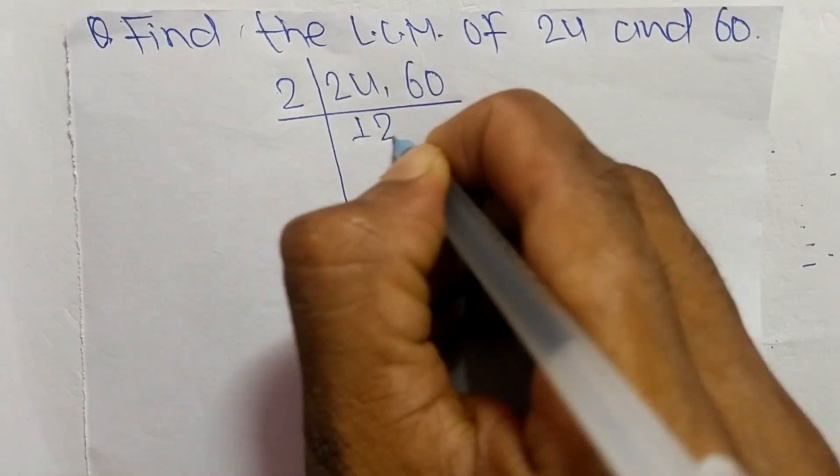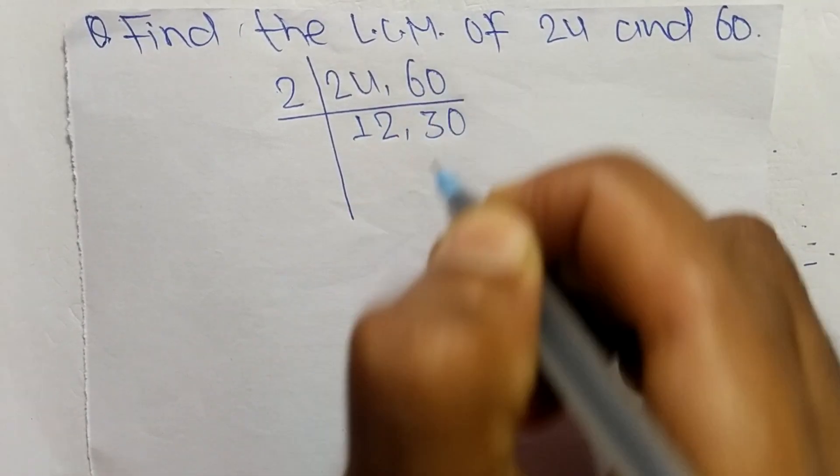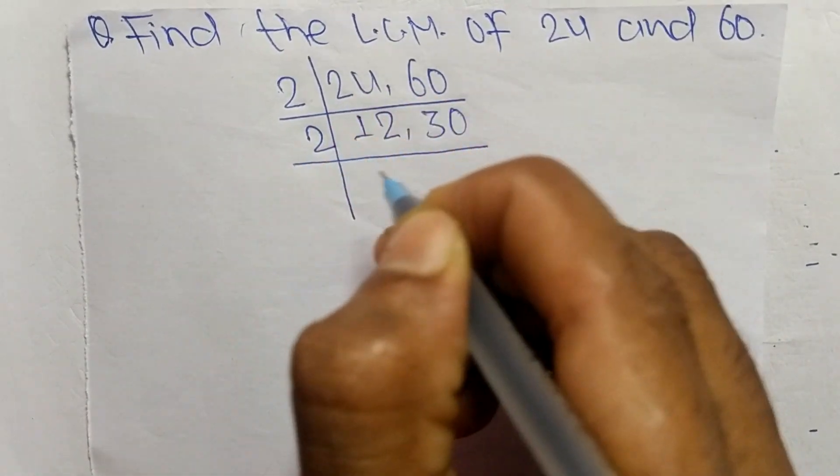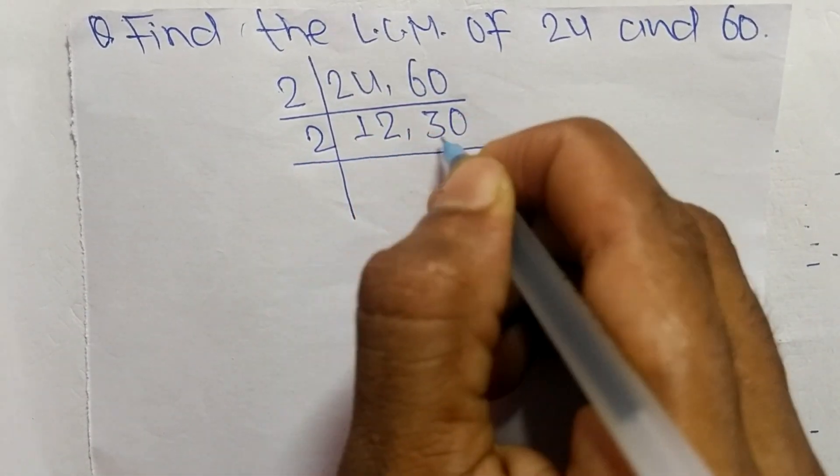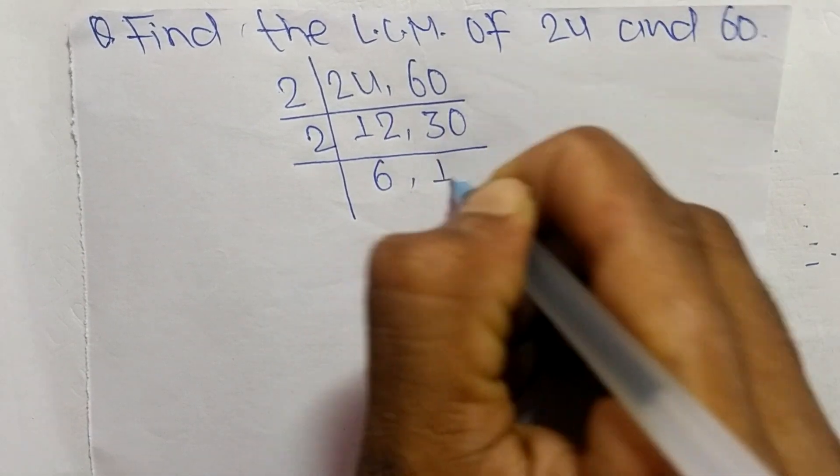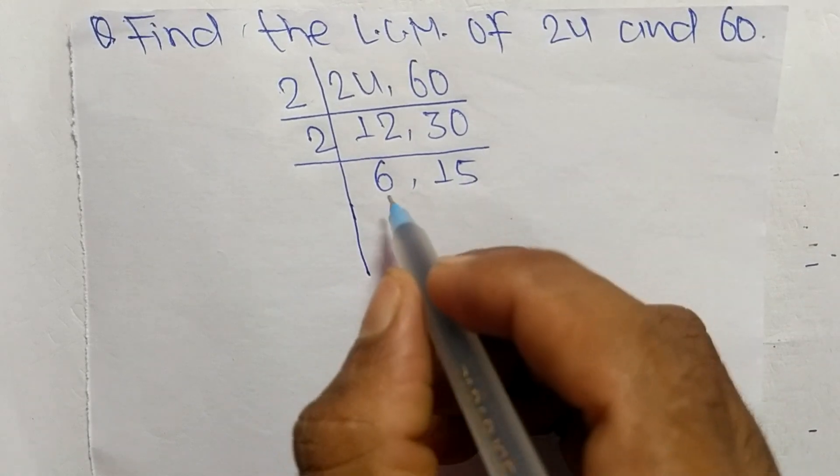2 times 12 means 24 and 2 times 30 means it is 60. Like as 2 can again divide these both numbers, so 2 times 6 means 12, 2 times 15 means 30. So now we have here 6 and 15.